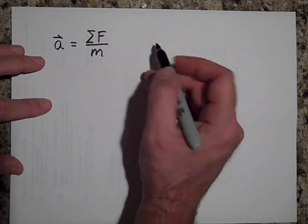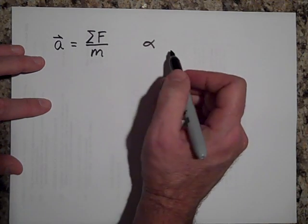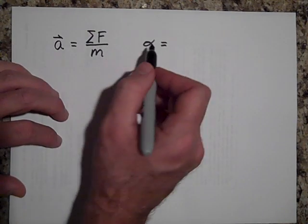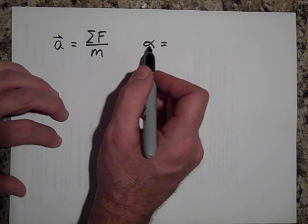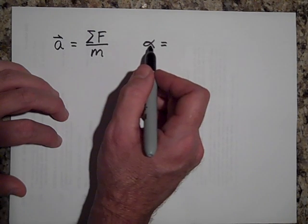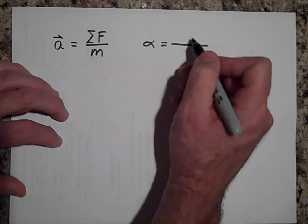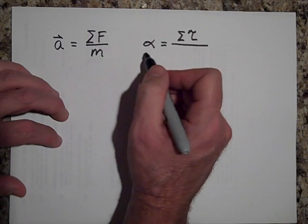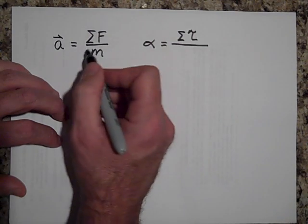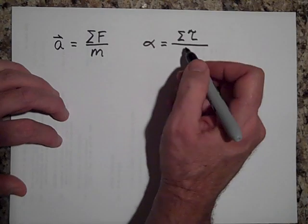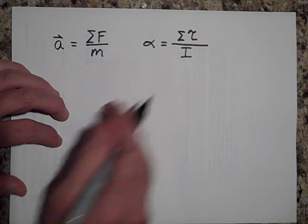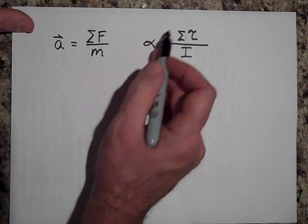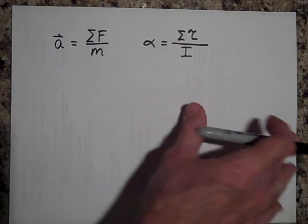Well, Newton's second law for rotation says alpha, the angular acceleration, is equal to not the net force, but what causes an alpha? What causes something to start to rotate faster or slower? Not a force, but a torque. So it's a net torque, that just means the sum of all the torques, and then we're not going to divide by the mass, but by the rotational inertia, I. So that's how that works. This is called Newton's second law for rotational motion. And right now I'm going to show you how we use that.